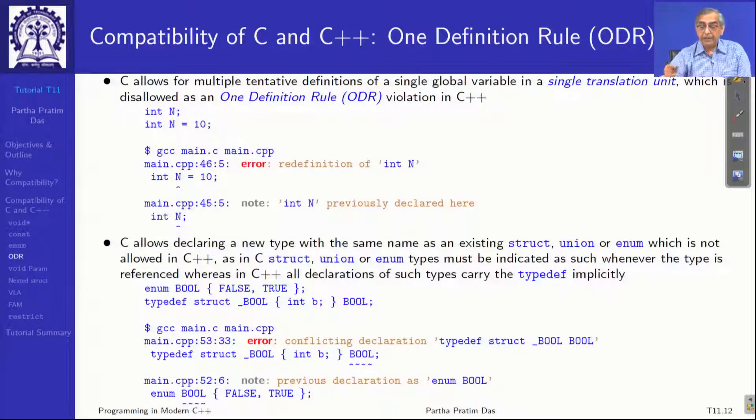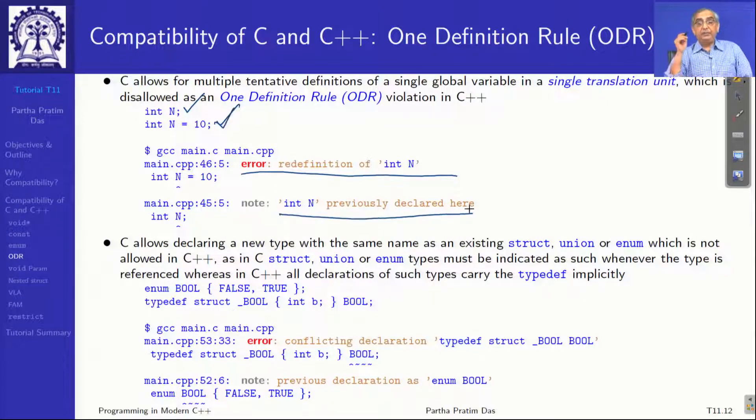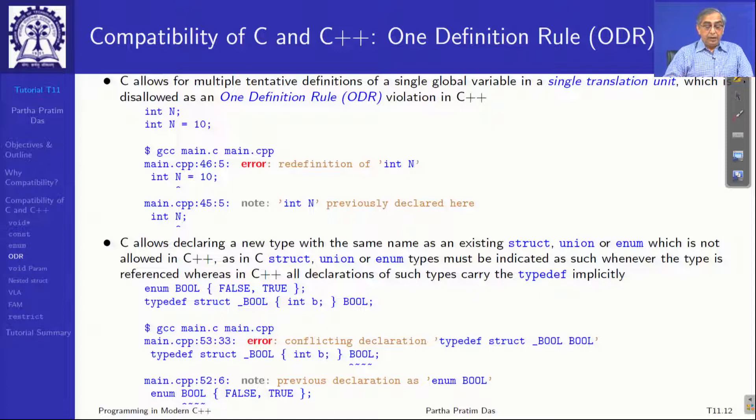Then C++ has one definition rule that you can have only one definition of a variable, you cannot have multiple. So in C, you can write a static variable int n and then later you can write int n initialize 10. In C it is fine. But in C++, this is an error. When it encounters the second one, it says it is a redefinition, n is previously declared already. One definition rule excludes that.